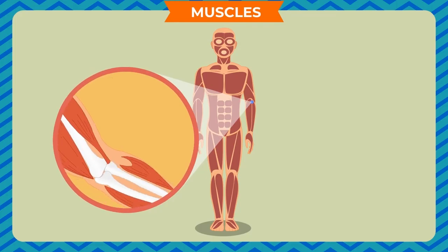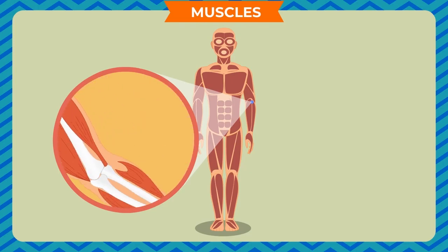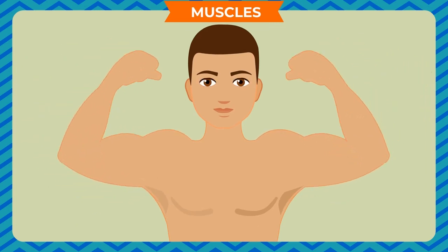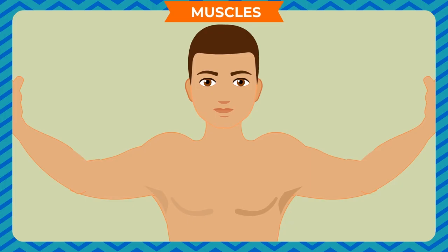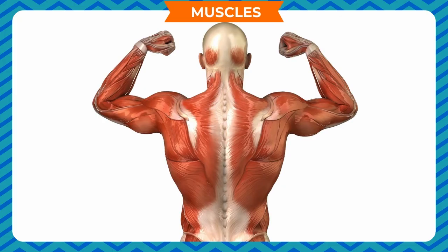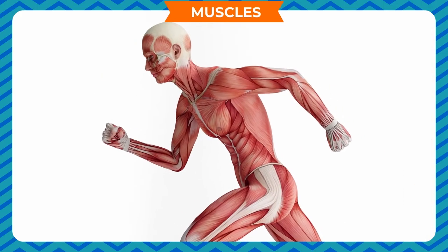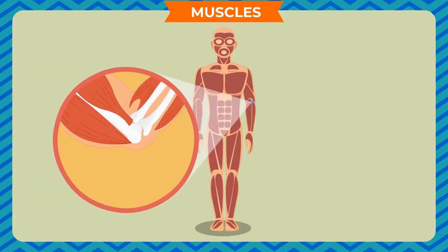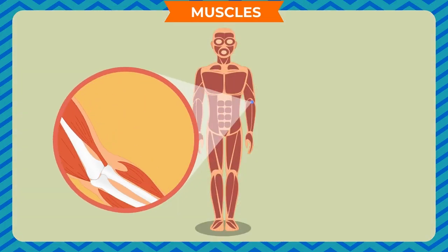Muscles: Bones help in movement of our body, but bones alone cannot do this as they are stiff. If you bring your hands close to your face, you see your arms looking stout. When you let your hands go back to their position, they look straight again. There is something attached to our bones which makes us look flabby and fleshy — this is what we call muscles. The contraction and relaxation of our muscles along with the bones allows proper movement of the body.